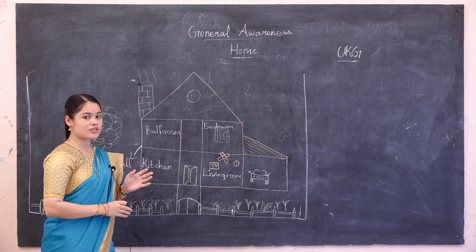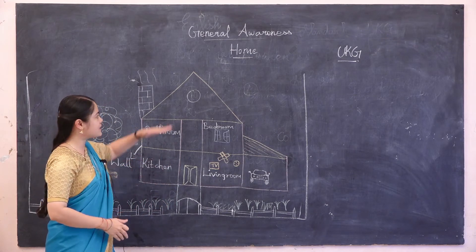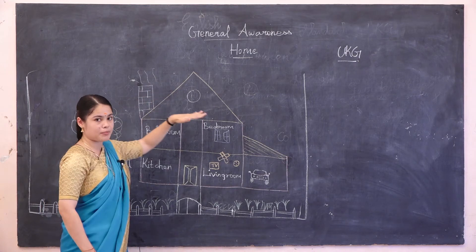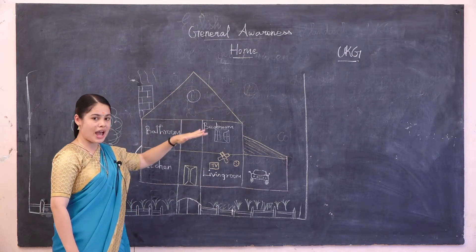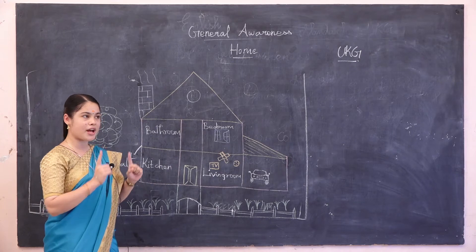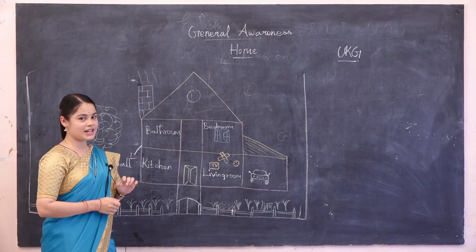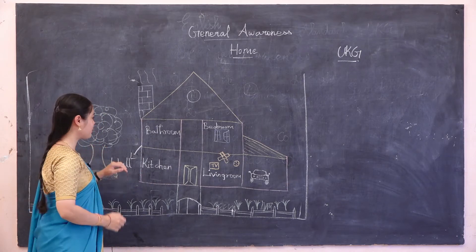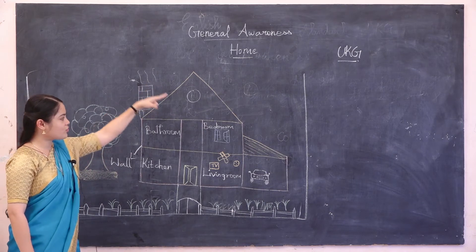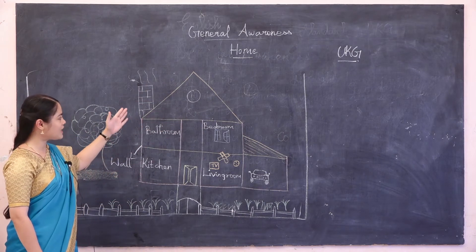In some houses, the roof is in a flat path. This roof is on a slanting path. Do you have a roof at your home? You have a roof. Can you see something on the roof?